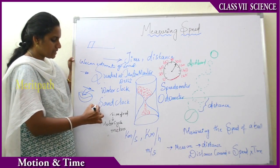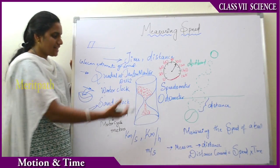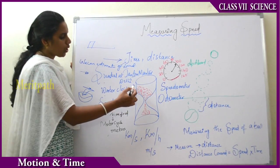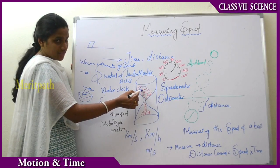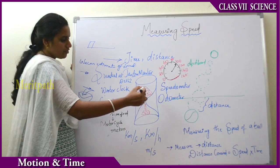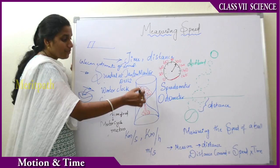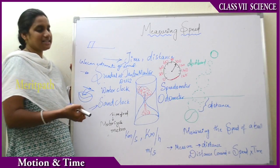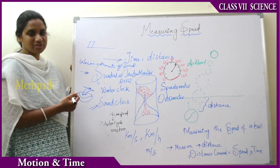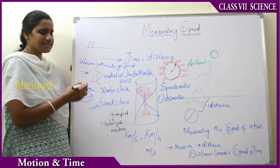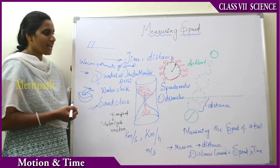Now again we will see the sand clock, as shown in the figure. The sand clock has two conical shapes. The sand is kept in one jar and it is reversed — then it slowly falls down to the other jar. The time taken for the falling of the sand particles helps us decide the speed of objects and the time taken for the objects to move. All these three are the older methods used to find out the time and speed of objects.